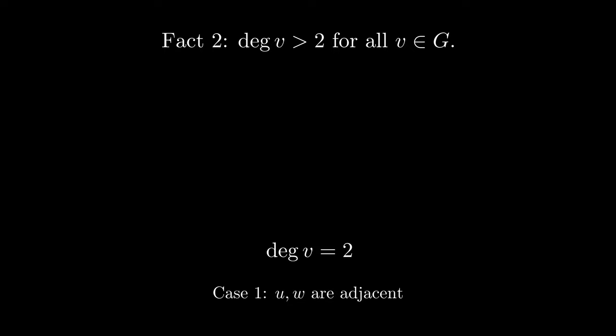Then, consider the case where u and w are adjacent to each other. The graph h obtained by removing v from G is a planar graph by the minimality of G. If we embed h, we can then reinsert v next to the edge uw into the graph to get a planar embedding of G. This contradicts the nonplanarity of G.